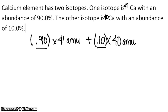So when you do the math out, remember to multiply before you add. You're going to get 40.9 atomic mass units.